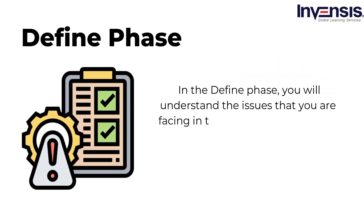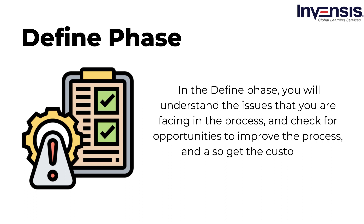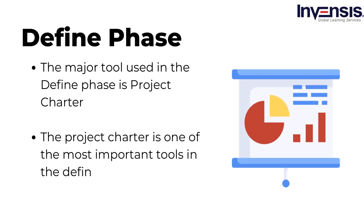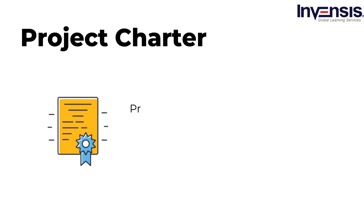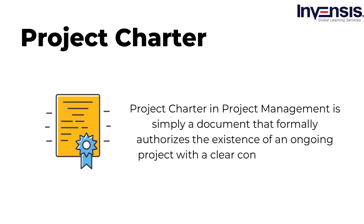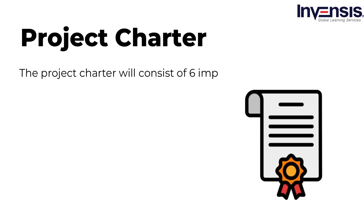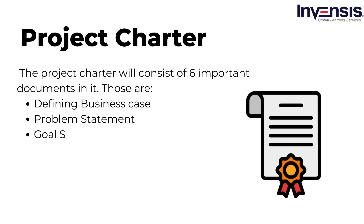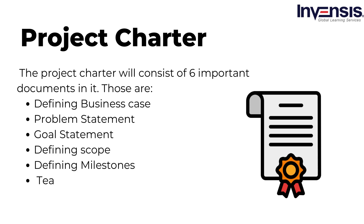In the define phase, you will understand the issues that you are facing in the process, check for opportunities to improve, and get customer requirements. The issue is considered as a single process and you work toward resolving it. The major tool used in the define phase is the project charter. A project charter in project management is a document that formally authorizes the existence of an ongoing project, with a clear, concise statement of its goals. It consists of six important elements: defining the business case, problem statement, goal statement, defining scope, defining milestones, and team charter.